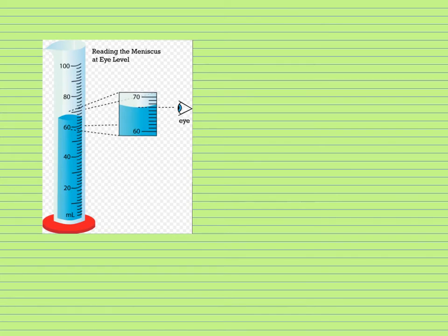It's also important to know how to read a graduated cylinder or some other container with a volume. So first, let's make sure we know what a meniscus is. You see this curved, this curve right here? That's what we call the meniscus.